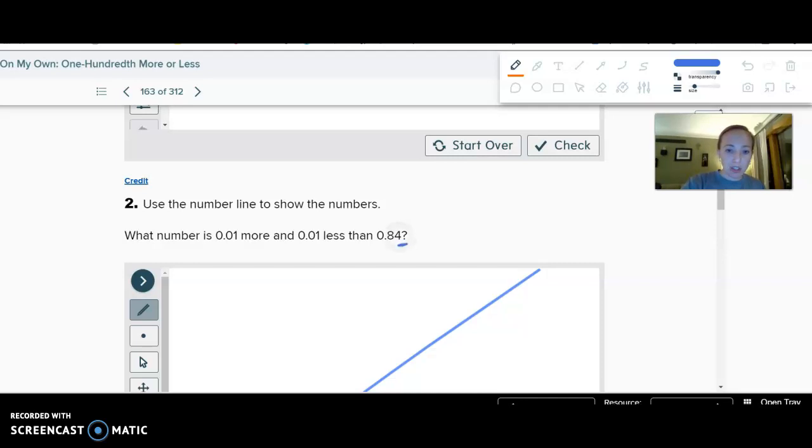So, again, I can either just look at this four and just think, okay, I need to change the four to a three to get eighty-three-hundredths, then change it up to a five. Or I can say, okay, I have 84.